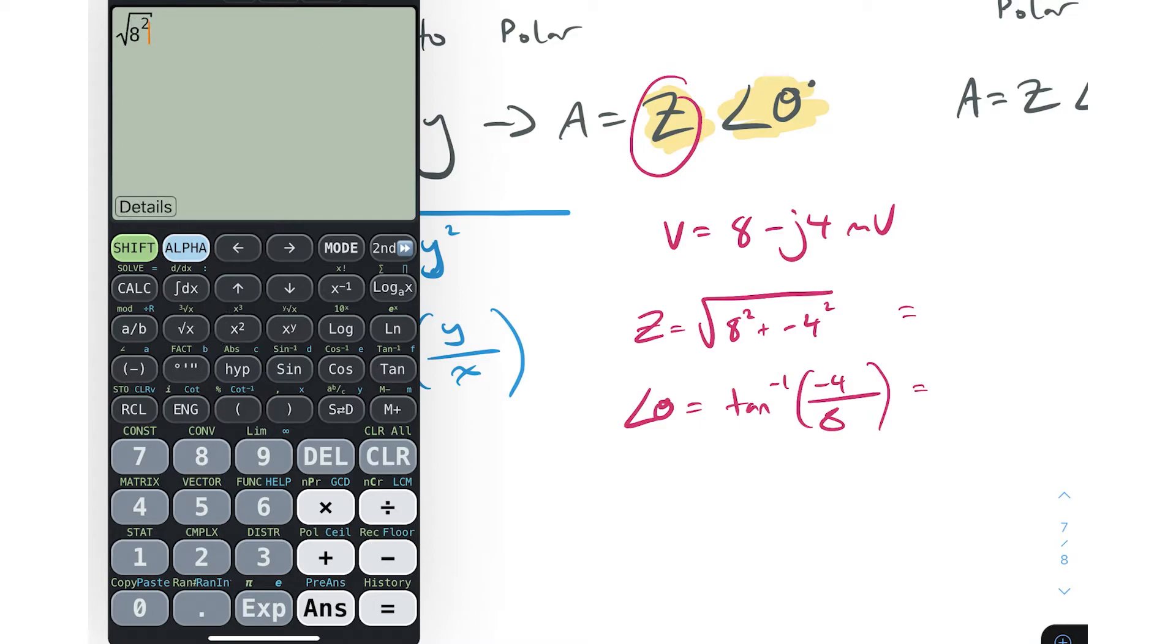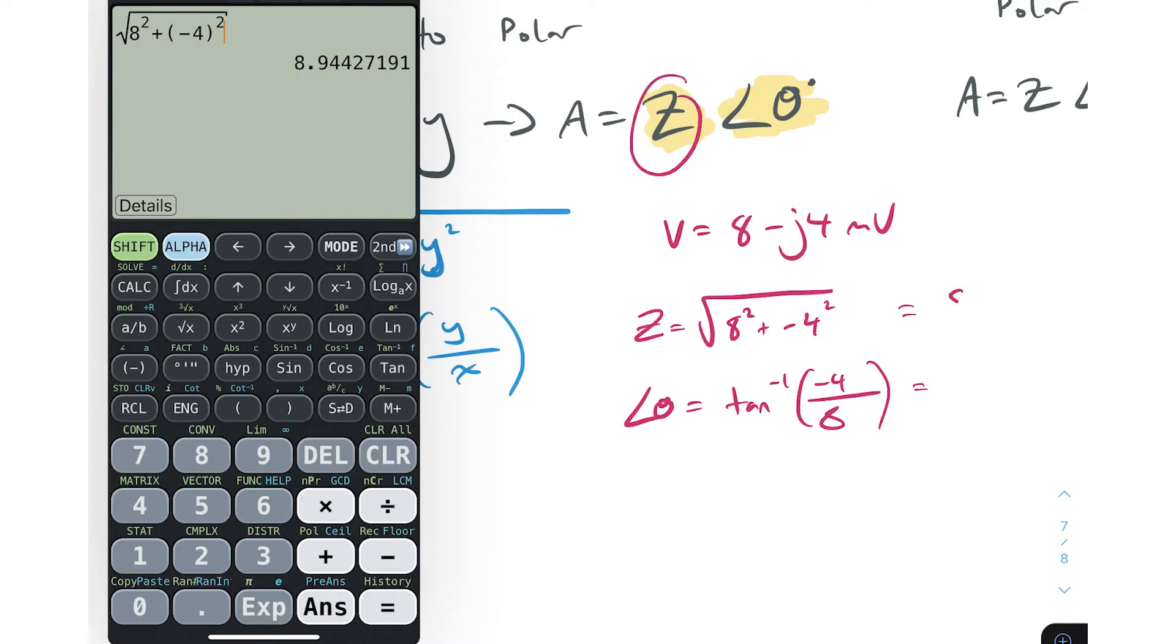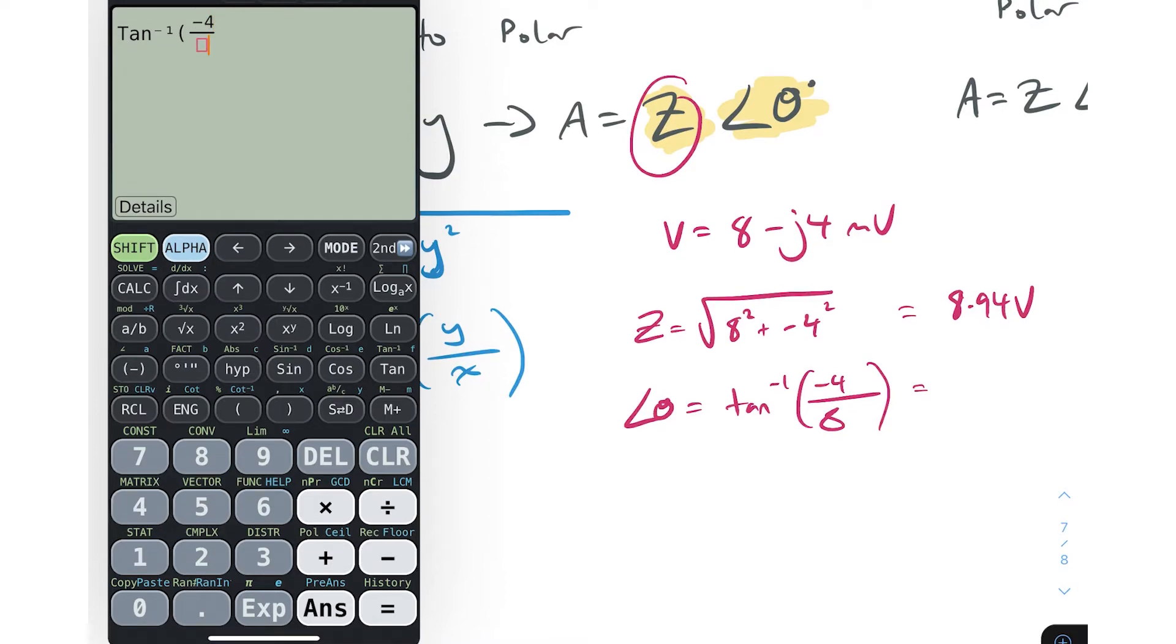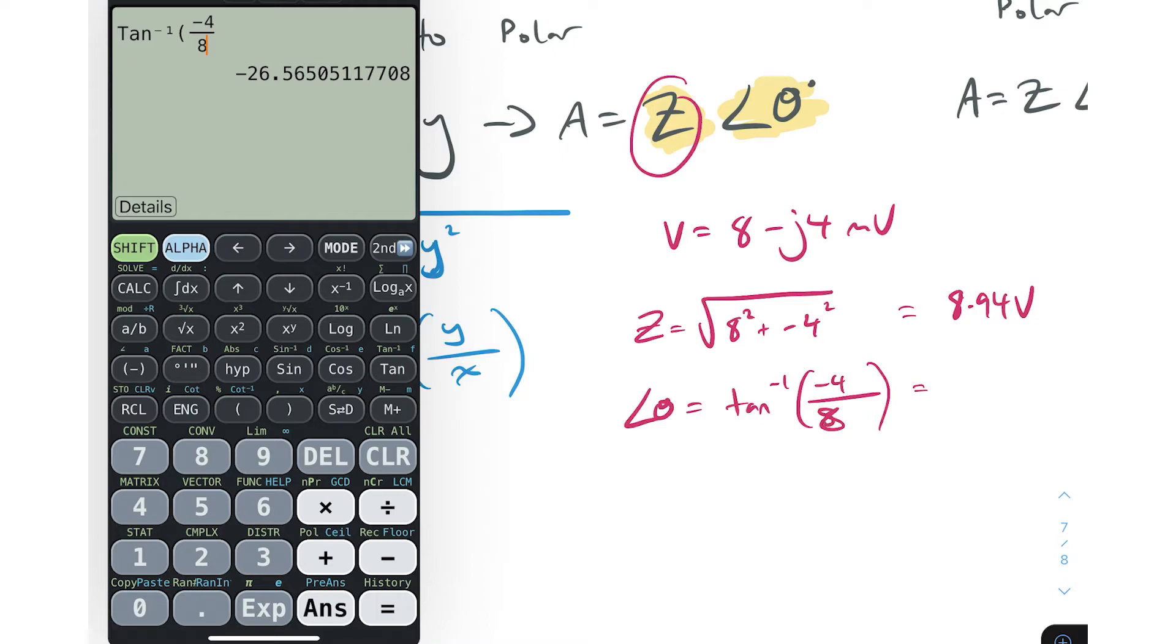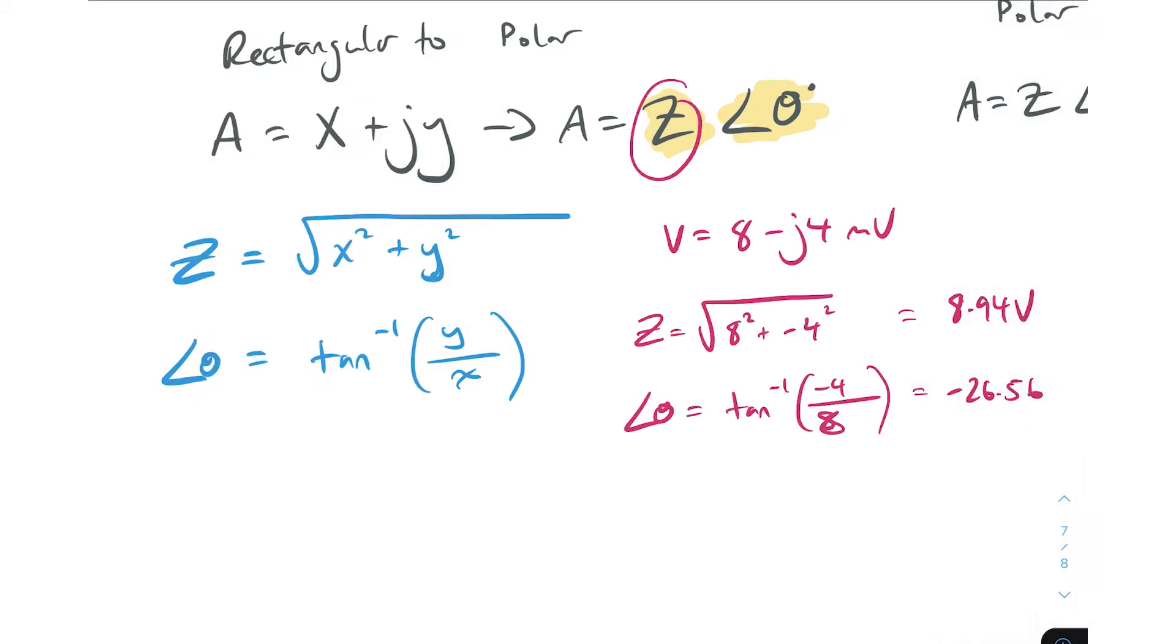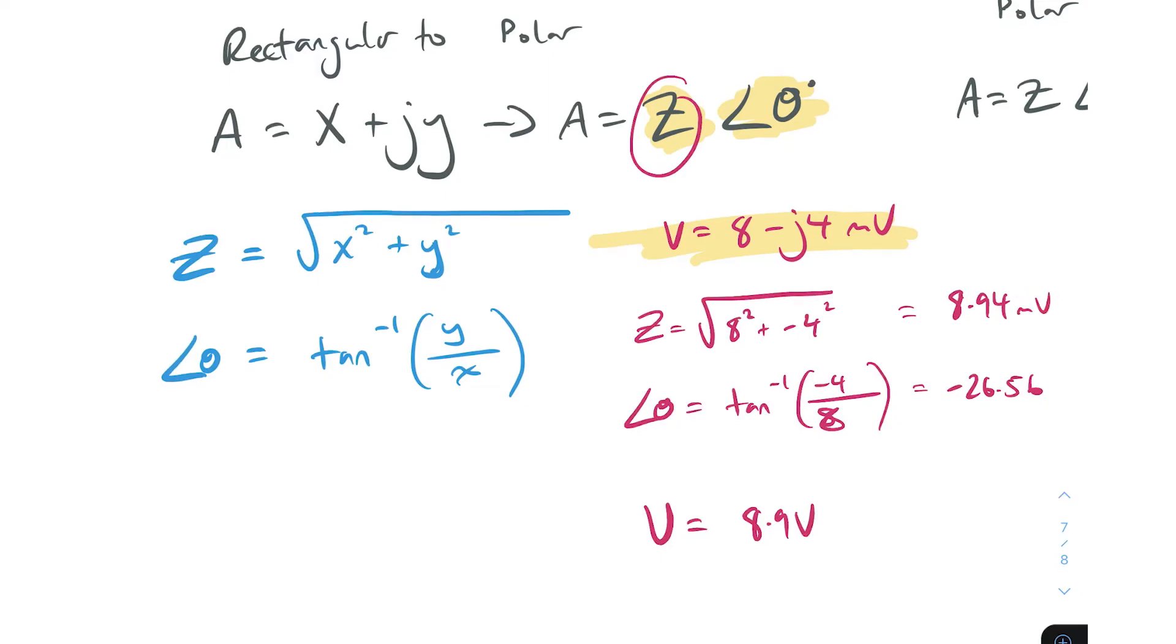That's our Z component. Our angle is going to be tan to the minus one and then y, which is minus 4 - this is where it's very important to include the minus - minus 4 over our x which is 8. Let's use our calculator. We've got the square root of 8 squared plus minus 4 squared, and that gives you 8.94 volts. Then let's get our phase angle: shift tan to the minus one, and then minus 4 over 8. That gives us a negative angle of negative 26.56.